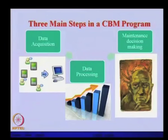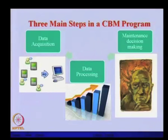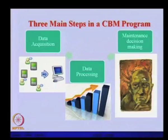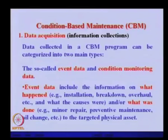There are three basic components in the condition-based maintenance program. The first is data acquisition — we collect data from various sensors and store it in a computer. The second is data processing — once we have collected a large amount of data, we put it in a proper form and plot it in bar charts or other formats for easy analysis. The third is maintenance decision making — once we have the data, experts analyze it and make decisions for maintenance.